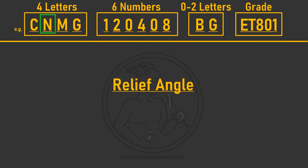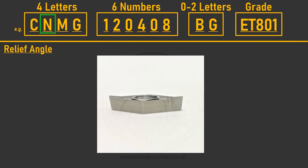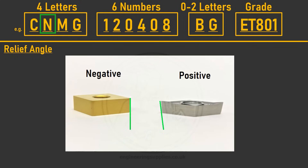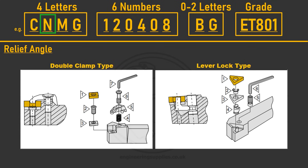The second letter refers to the relief angle on the side of the insert. These are either negative or positive. The most common is N, which is zero degrees, or negative. This means that almost all the time the insert can be flipped over and you can cut on the other face, doubling the number of cutting edges. All negative inserts are held in tool holders by some form of clamp mechanism.